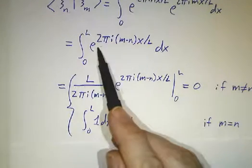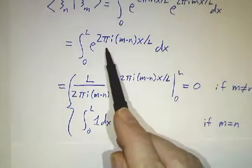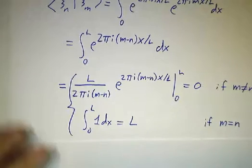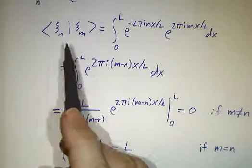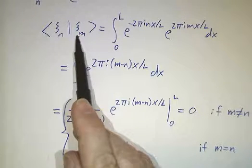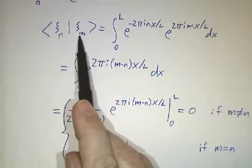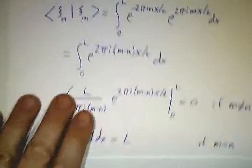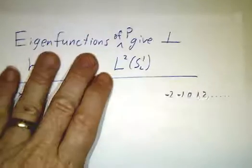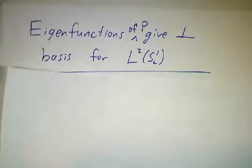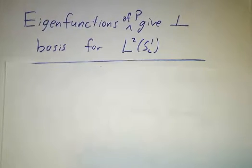If m is equal to n, it's e to the 0 dx, so that you're integrating 1 dx, and that gives you L. In other words, the inner product of any vector with itself gives you L. The inner product of any vector with a different eigenvector gives you 0. Which is to say, we have an orthogonal basis for L². In the next video, we'll see what happens when you decompose functions in this basis.